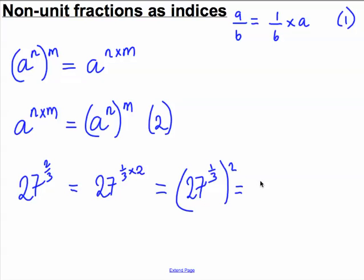Well, 27 to the 1 3rd is the cube root of 27. All of this is to the power of 2. The cube root of 27 is 3, so this must be equal to 3 squared, and 3 squared is equal to 9.